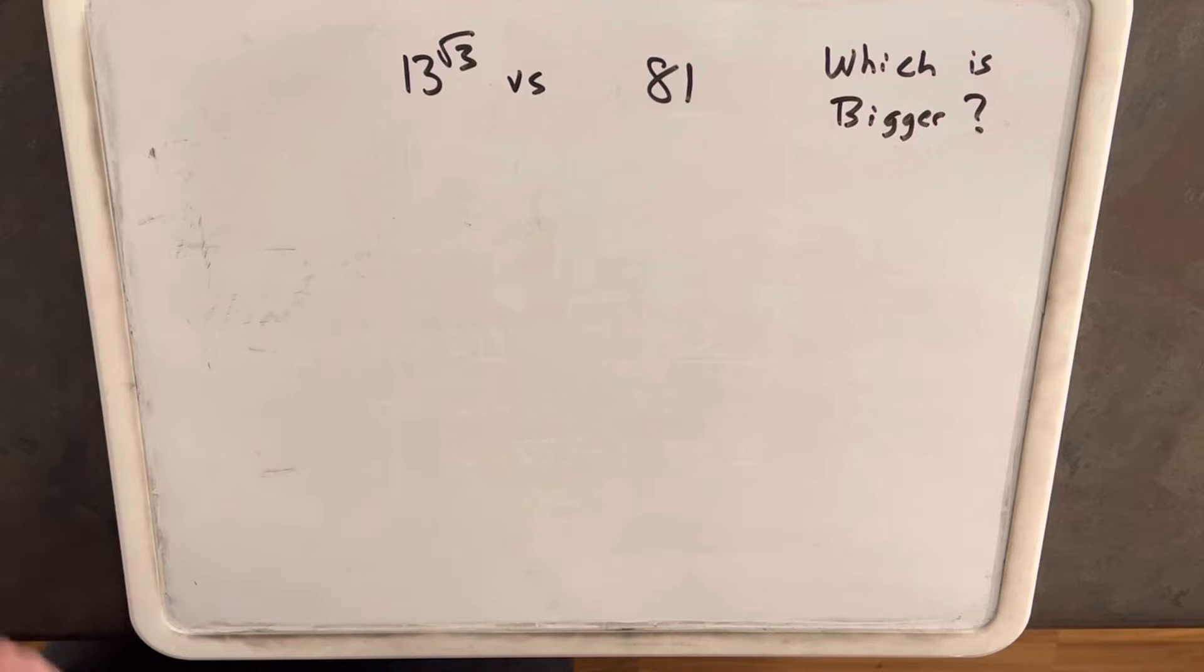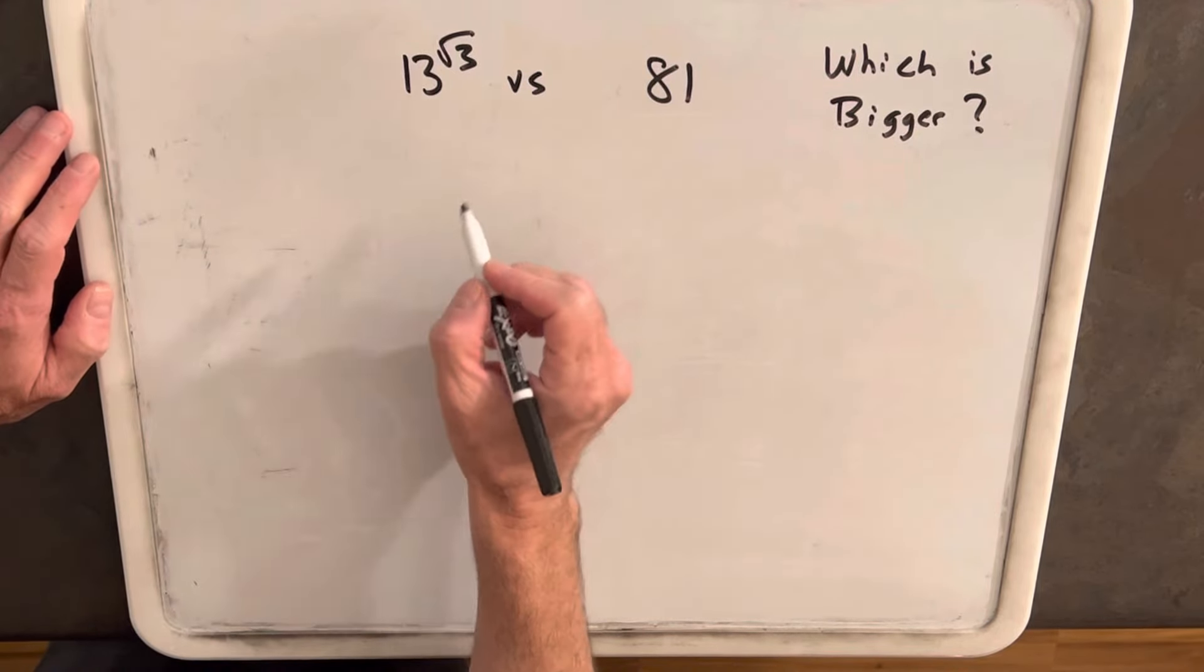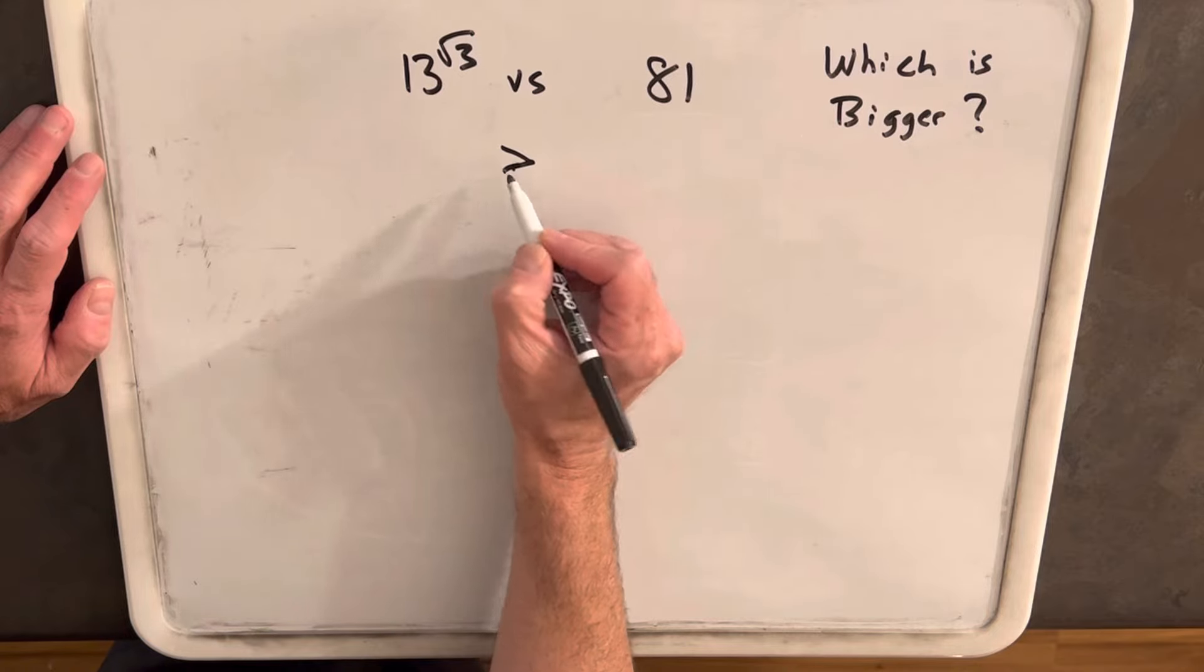So I'm going to start off and guess that 13 to the square root of 3 is bigger, just because I like to use a greater than symbol rather than a question mark.